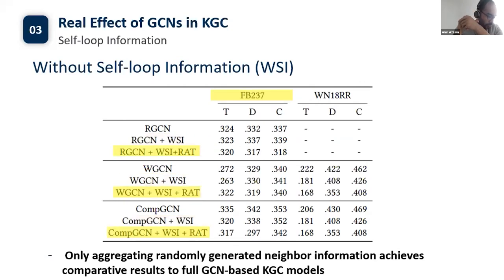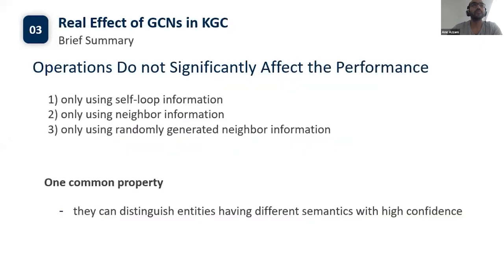We randomly break the adjacency tensors while leaving out self-loop information. Since we only use neighbor information, we expect random adjacency tensors to reduce performance significantly. However, the performance is only slightly affected for most decoders. That is, only aggregating randomly generated neighbor information achieves comparative results to full GCN-based KGC models. Until now, we have found that the following operations do not significantly affect performance on FB15K-237: only using self-loop information, only using neighbor information, and only using randomly generated neighbor information.